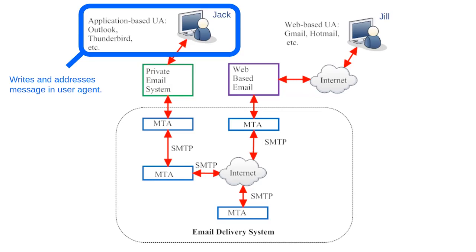Jack will begin by writing and addressing the email using what is called a user agent. In Jack's case, his user agent is an email application that lives on his own computer. Examples of such applications include Microsoft Outlook or Mozilla's open-source Thunderbird email application. These applications are compatible with private email systems, like the one that Jack uses.